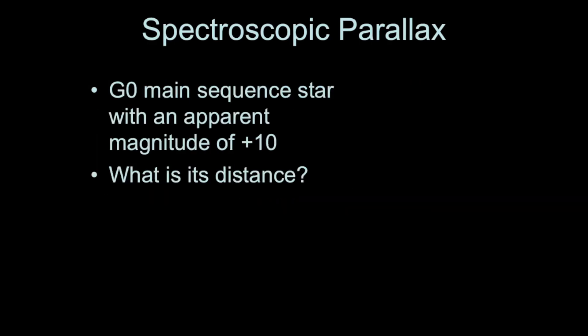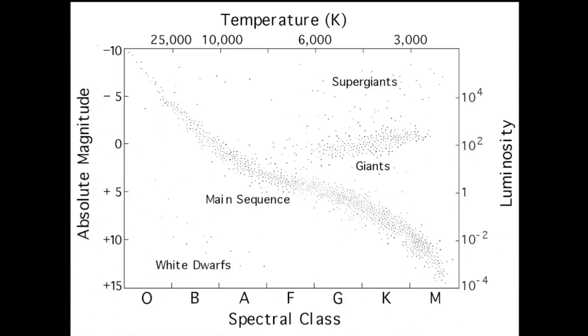Here's an example. What if we had a G0 main sequence star with an apparent magnitude of positive 10? What is its distance? Well, we can go to the HR diagram and for a G0 type star, a G0 type star has an absolute magnitude of maybe positive 4.